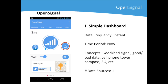Here we associate the layer with four properties: one, the frequency at which data is collected; two, the time period covered by the data collection; three, the concepts that might come up in a conversation with students; and four, the number of data sources. In the case of the simple dashboard, the frequency is one instant, the current time. The concepts include good and bad signal, and there's only one data source: your own phone.